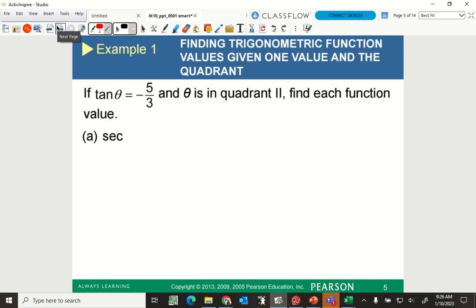All right. Finding trigonometric function values given one value in the quadrant. Okay. What do you know tangent is? What does tangent represent? Y over x. Tangent is y over x, right? So y over x. So it's y over x. Tangent is y over x. So three things I know is x, y, and r.